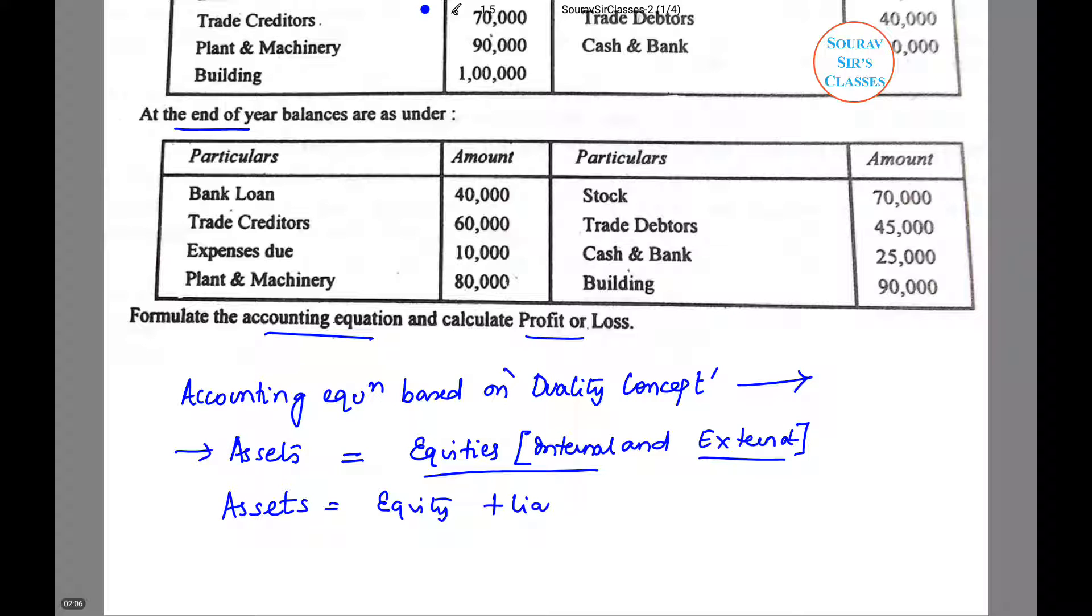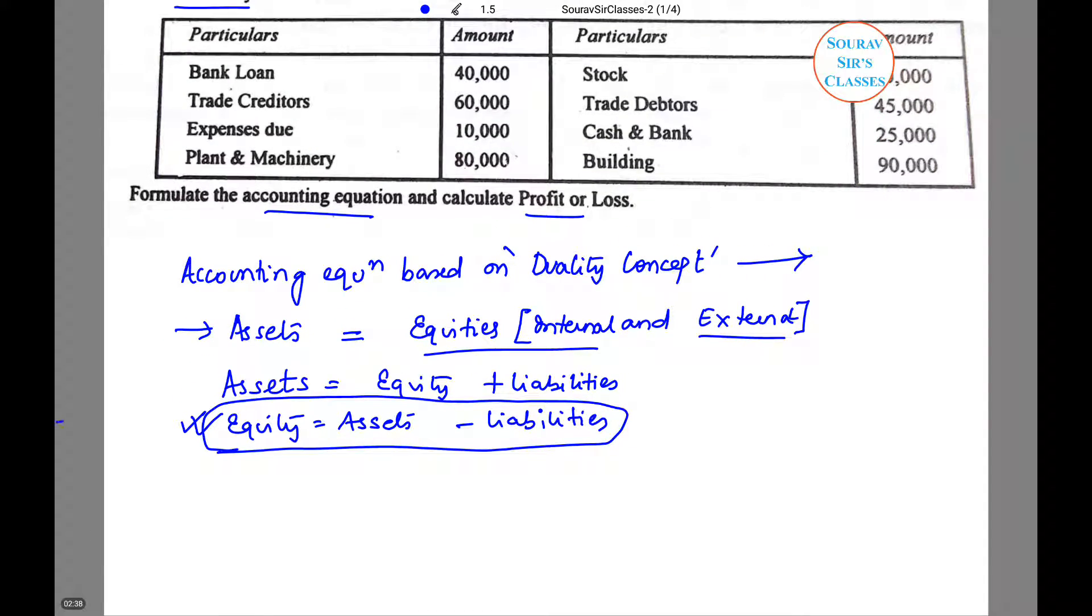Or we can rewrite this as equity equals assets less liabilities. Now using this form of the accounting equation, we will tackle the above problem. We will calculate the value of equity at the beginning of the year and at the end of the year.